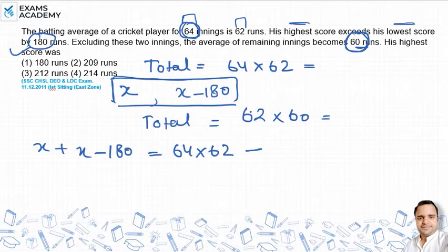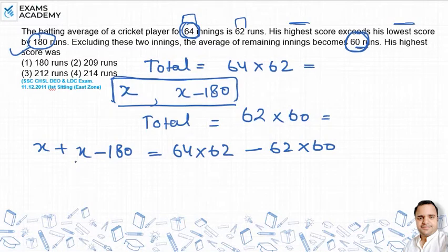जो बाद में हो गया, दो इनिंस हटाने के बाद वो कितना हो गया: 62 times 60. इन दोनों के total का difference इनके sum के बराबर है। तो यहां से x के लिए calculate करते हैं, तो value हो जाएगी 2x minus 180.